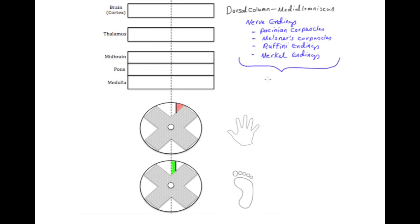These are sensory nerve endings that will sense touch, vibration, pressure, and proprioceptive sensation.